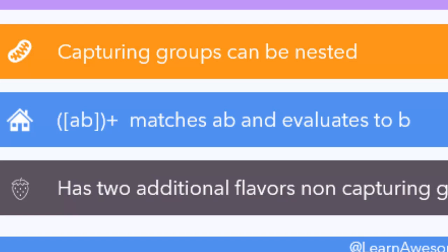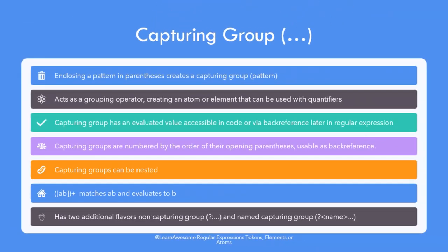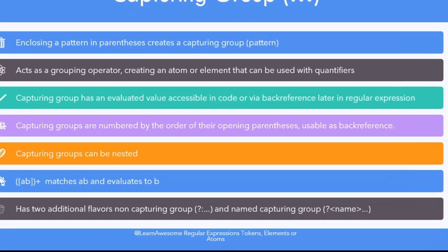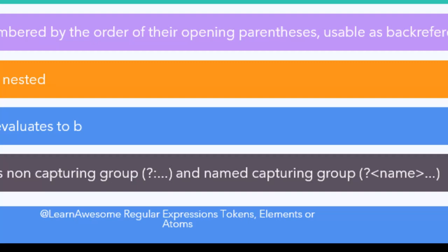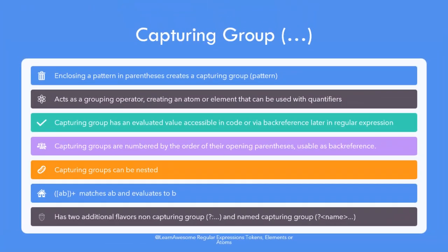Capturing groups have two additional flavors: non-capturing groups and named capturing groups. Non-capturing groups are used when you are not interested in the return value, acting as a pure grouping operator — the most common use case in general practice. Named capturing groups go one step beyond, allowing you to assign a name to the group so that during back referencing you can use the name as well as the number to refer to the value.